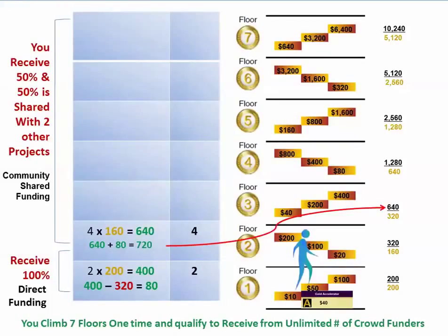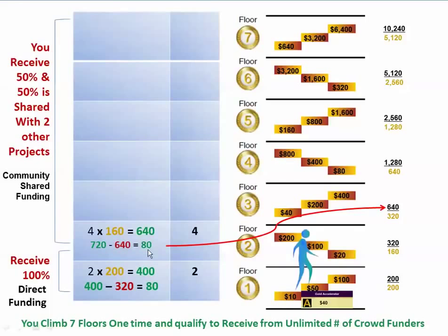You're going to take part of what you receive — out of the $720 — and share with a project that came before you three levels above: $640. You do it in steps: first a $40 share, then $200, then $400. When you add it all up it becomes a $640 donation for the whole floor, coming out of what you received from donations. That again leaves you $80 left in your pocket for your project.